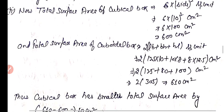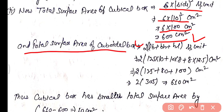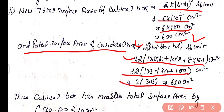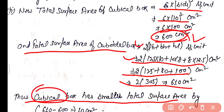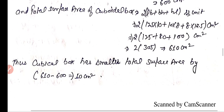Total surface area of the cubical box = 6 × (10)² = 6 × 100 = 600 cm². Total surface area of the cuboid box = 2(lb + bh + hl) = 610 cm². Thus the cubical box has smaller total surface area compared to the cuboid box by 610 − 600 = 10 cm².